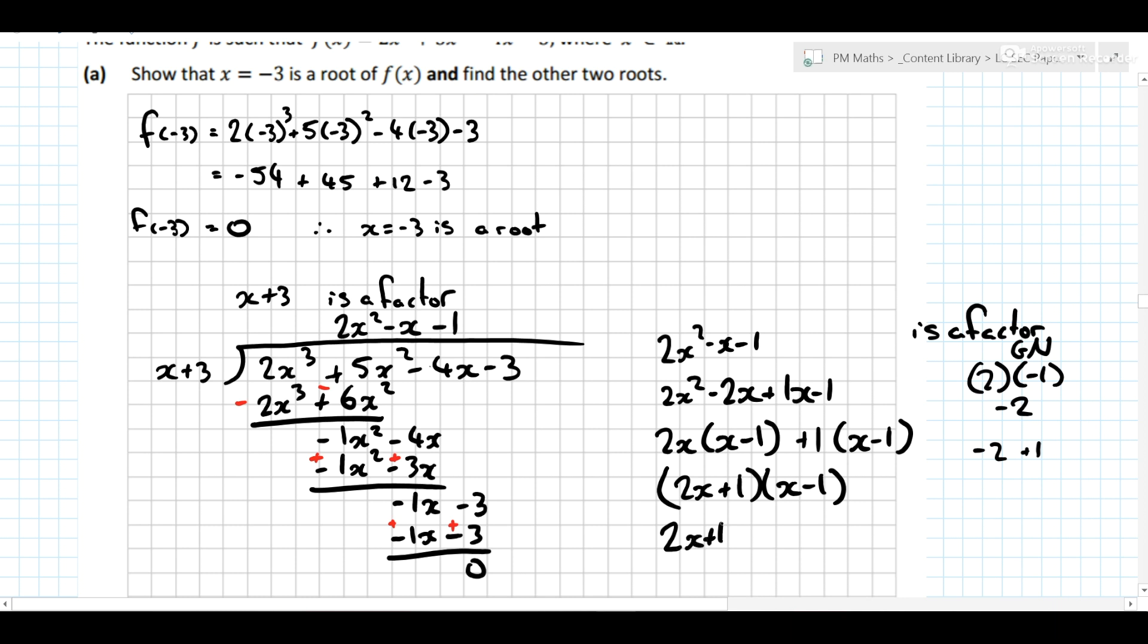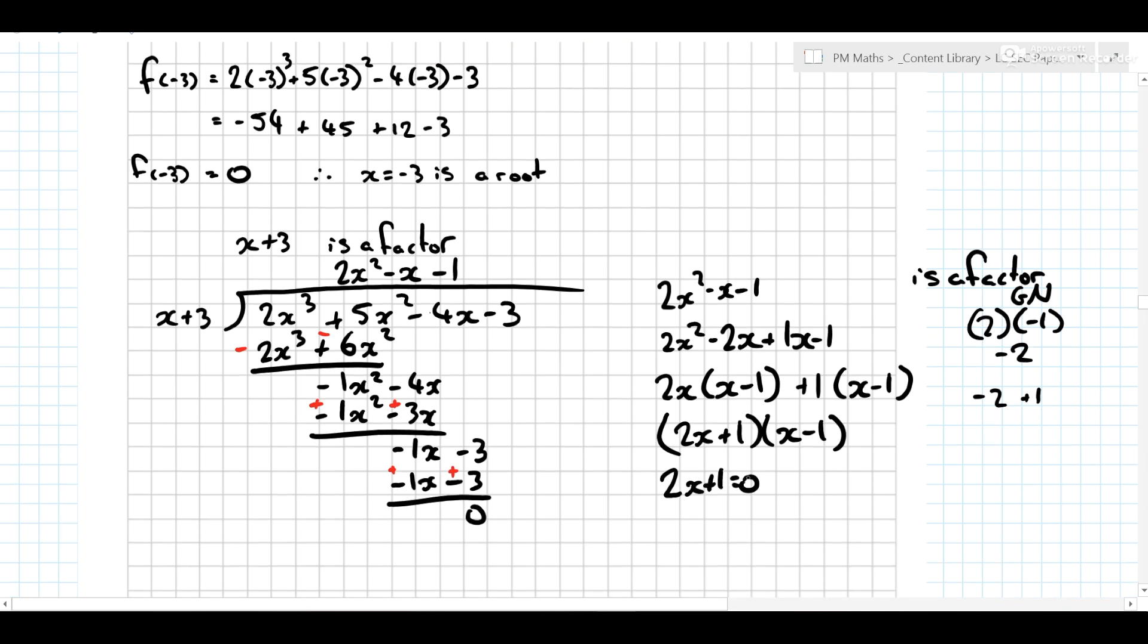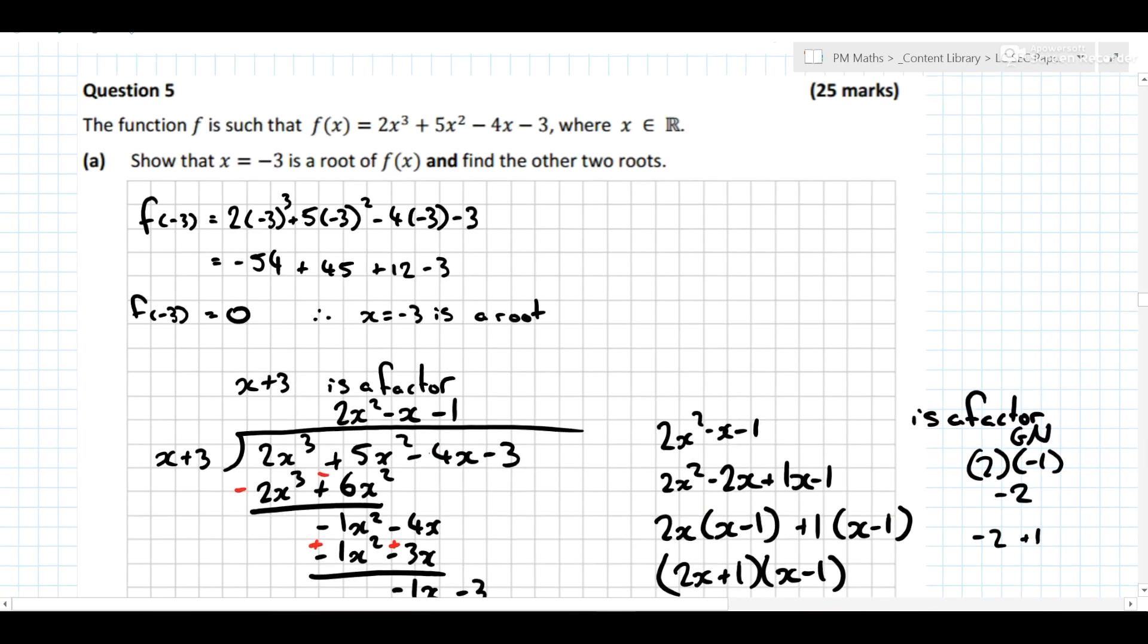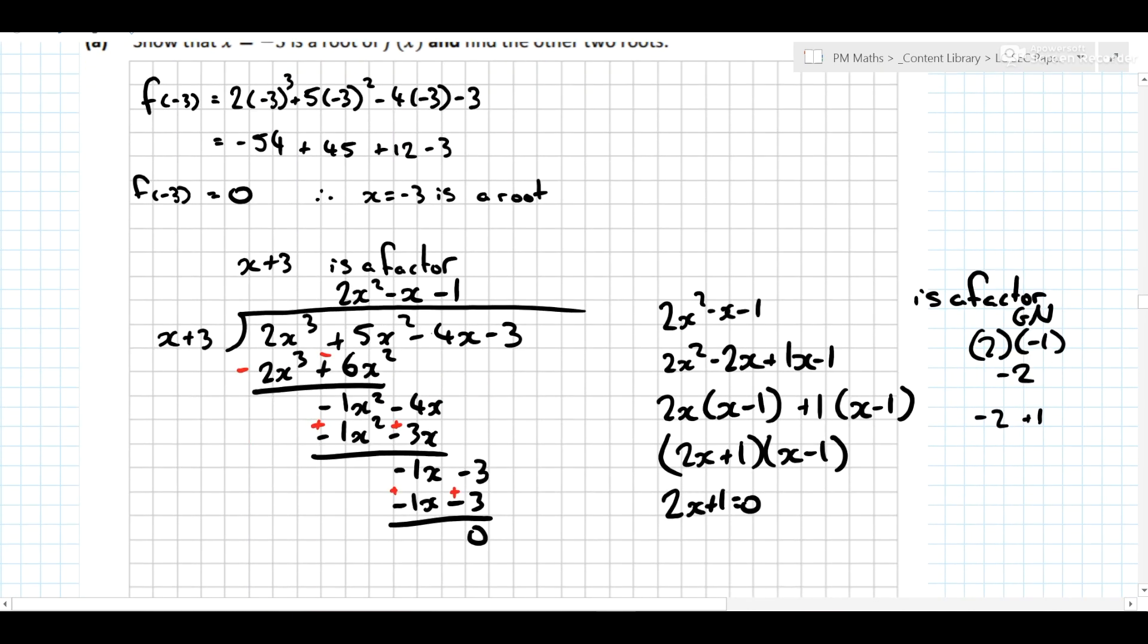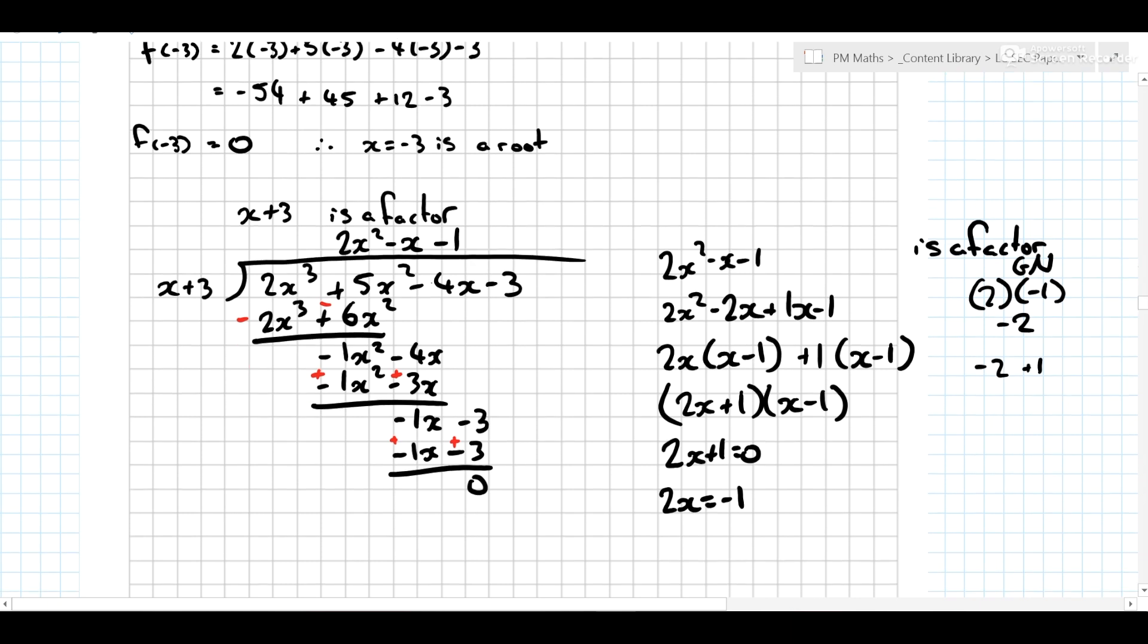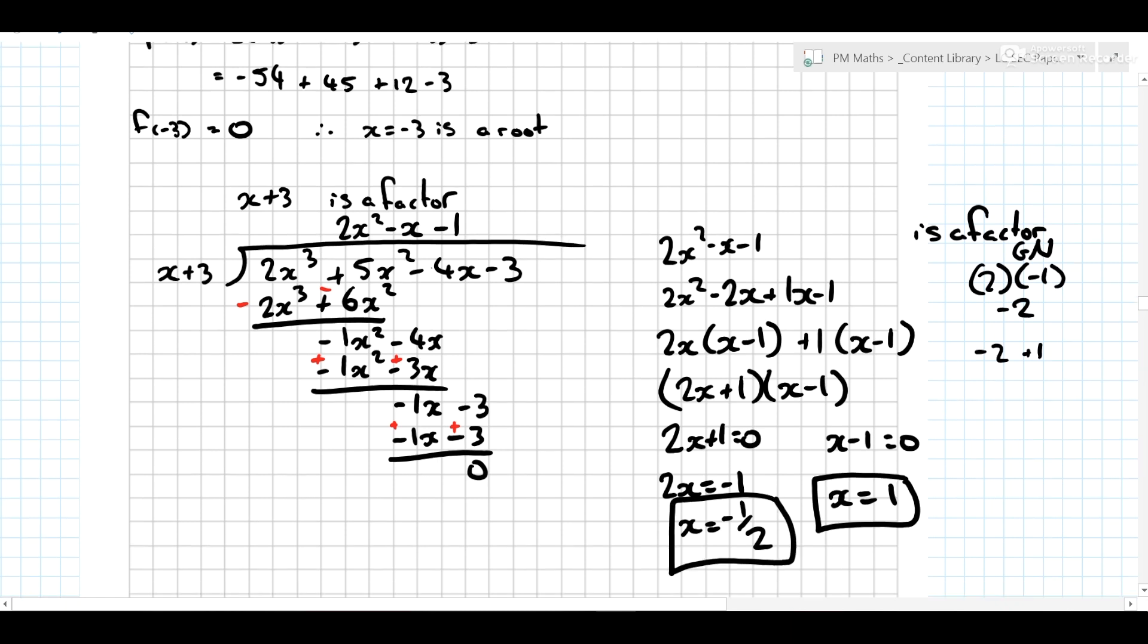And we also... 2x plus 1 is equal to 0. We want the roots, the question set, not the factors. Find the other two roots. So 2x is equal to minus 1, x is equal to minus 1 half. x minus 1 is equal to 0, x is equal to 1. All three roots.